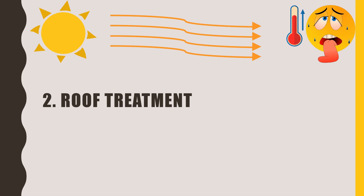This lime mixture will reflect sunlight falling on the roof, and thus temperature will be controlled. Apart from this, we can even use thermocol sheets to cover the entire terrace, or use inverted earthen pots to cover the area. Either of these options can control the inside temperature of your house.